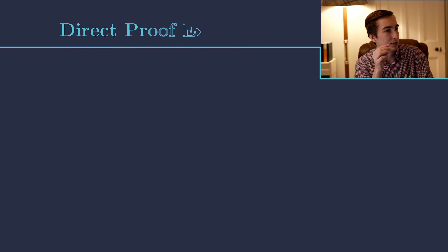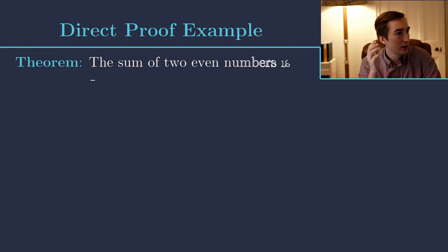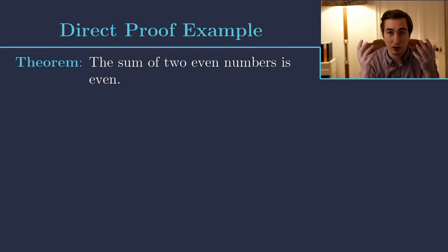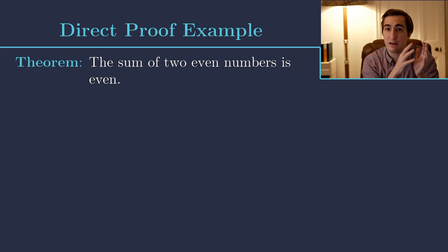To prove something directly: suppose we've been given a mathematical structure and a particular statement or proposition within it that we suspect is true and want to prove. A direct proof is one in which we prove that statement without modifying it in any way — we don't change it into an equivalent statement using propositional logic equivalences. We start with the original statement and prove its truth only using the axioms of our mathematical structure, that is previously assumed truths, or any previously proven theorems, combined with logical deductions.